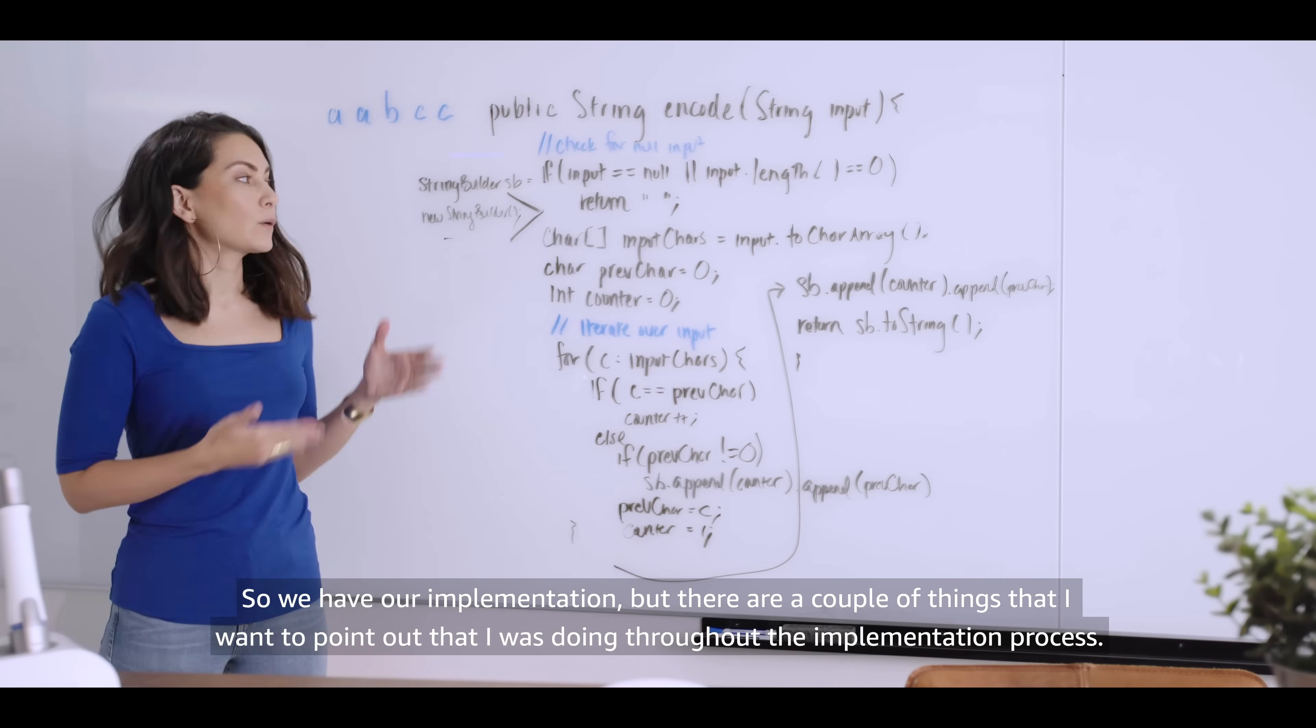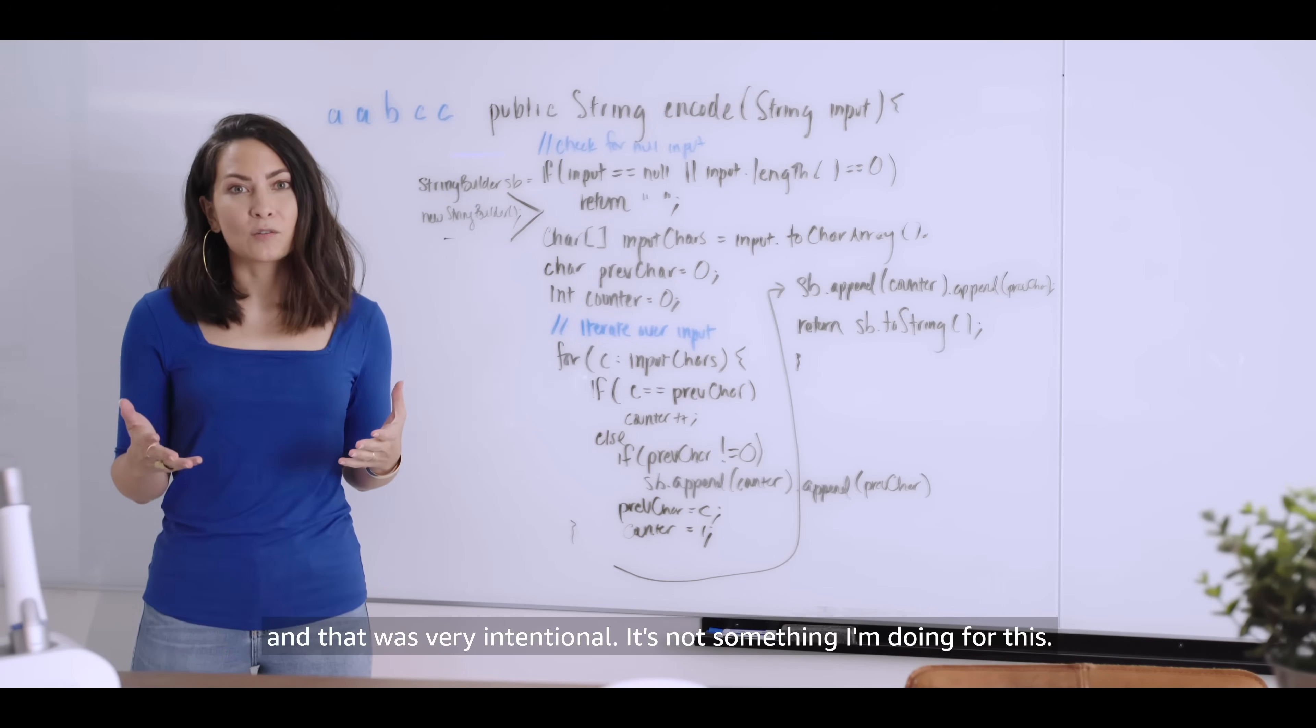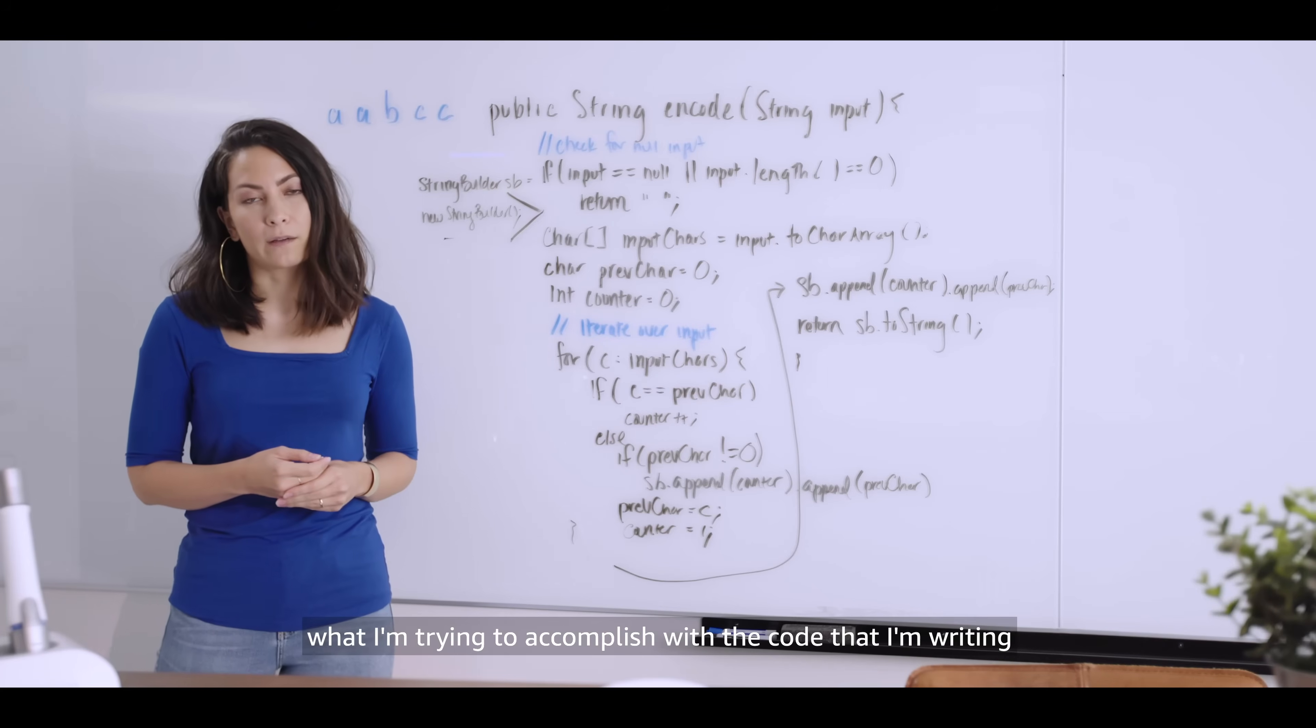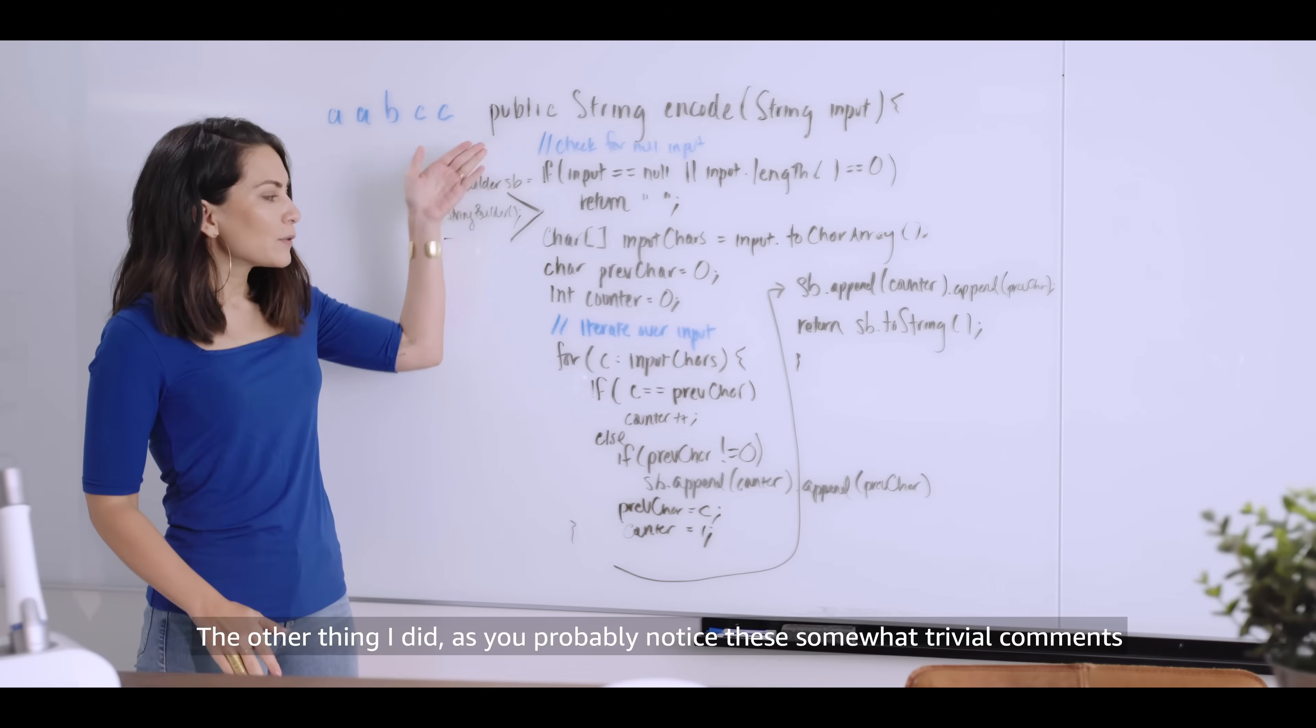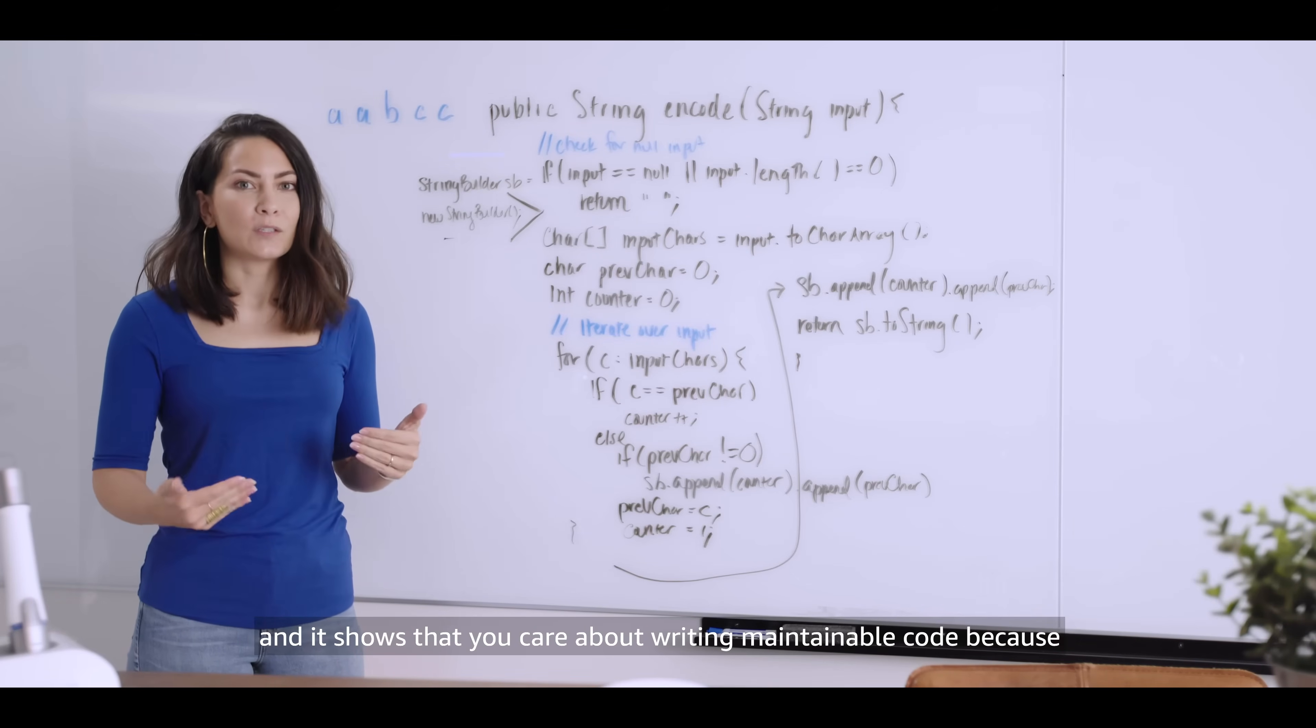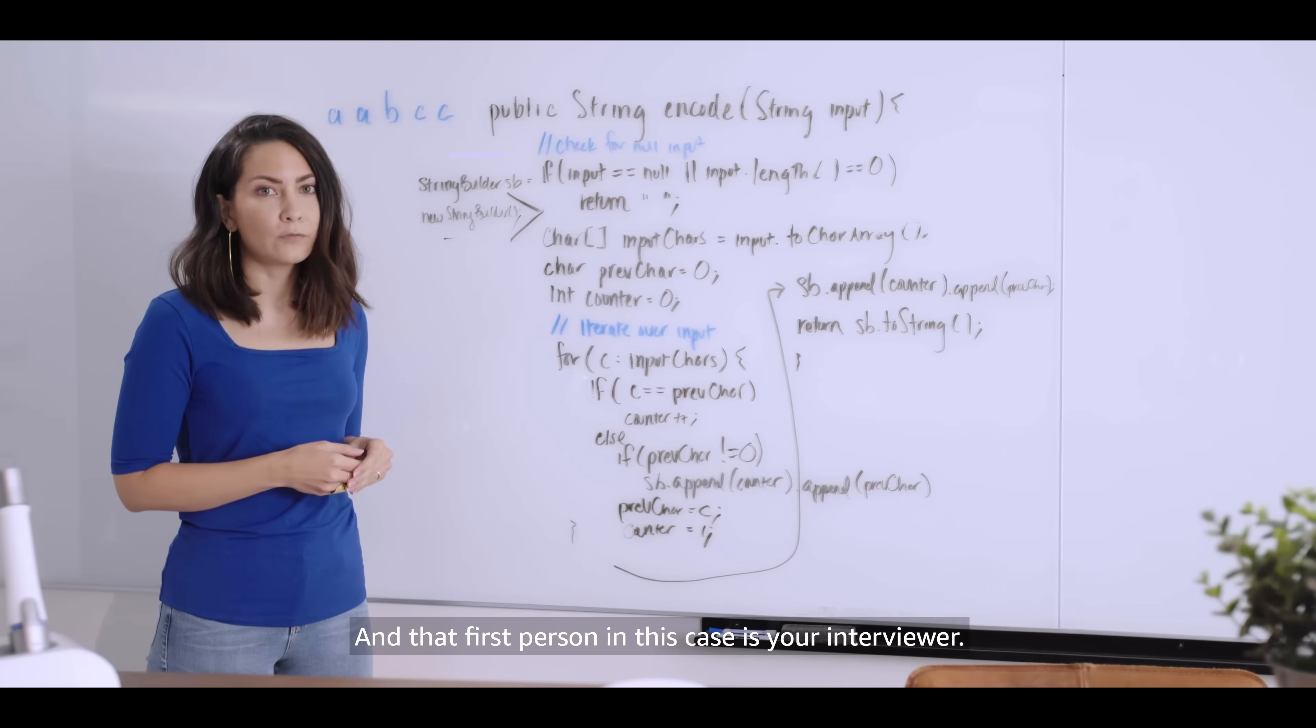But there are a couple things that I want to point out that I was doing throughout the implementation process. You probably noticed that I was talking out loud the whole time. And that was very intentional. It's not something I'm doing for this. It's to let the interviewer know what I'm thinking and what I'm trying to accomplish with the code that I'm writing. Because sometimes it's not obvious as you're going through the process. The other thing I did is you probably notice these somewhat trivial comments. It might seem trivial, but it's a great cue for both you and your interviewer. And it shows that you care about writing maintainable code because someone's eventually going to look at it and try to understand what you were doing. And that first person, in this case, is your interviewer.